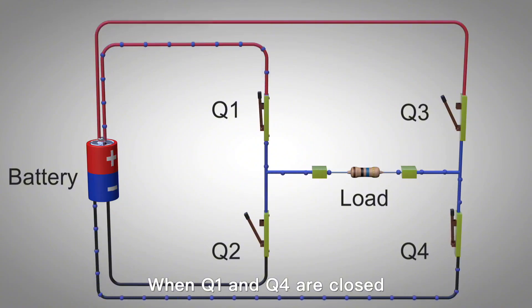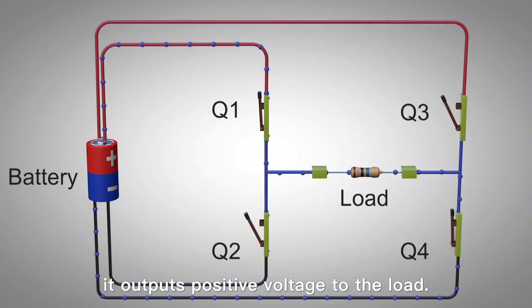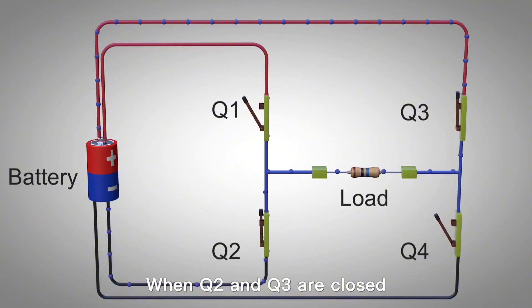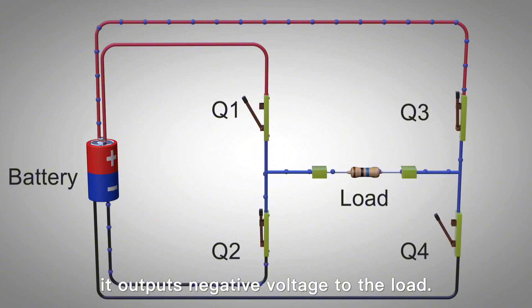When Q1 and Q4 are closed, it outputs positive voltage to the load. When Q2 and Q3 are closed, it outputs negative voltage to the load.